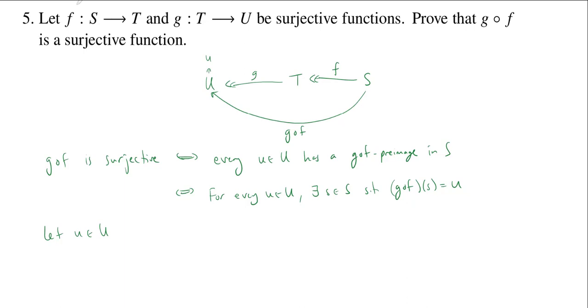So I have this element u in u. And I know that this function g is surjective, which means that u has a g preimage. So that means there is some little t in t such that g of t is equal to u. So since g is surjective, there exists a t in t such that g of t is equal to u.